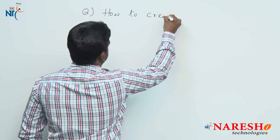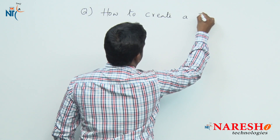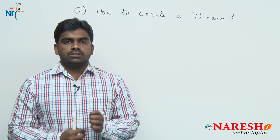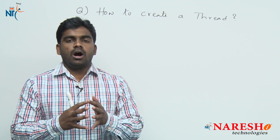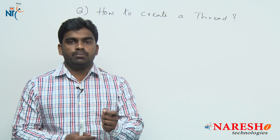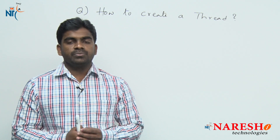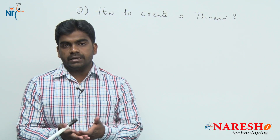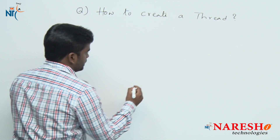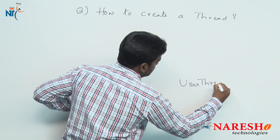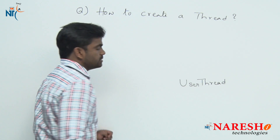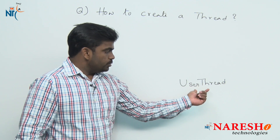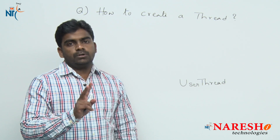The question is: how to create a thread? Generally in a Java application we are defining objects only, and we can represent an object with the help of a class. If you want to create a thread class, you can give any class name. Suppose it is a UserThread class name — following the convention rules where every word starts with a capital letter. If you want to create a user thread, you have two options.